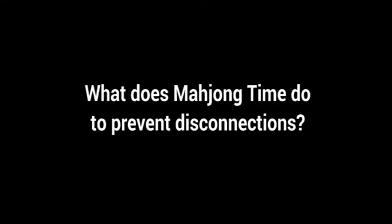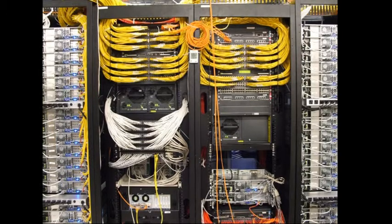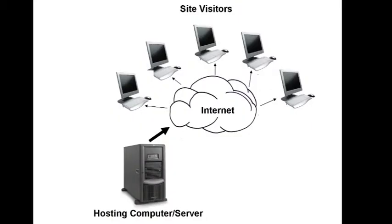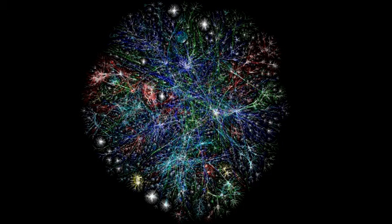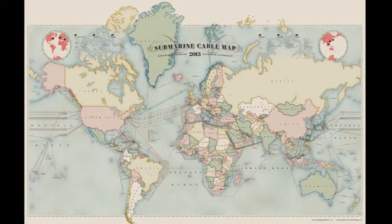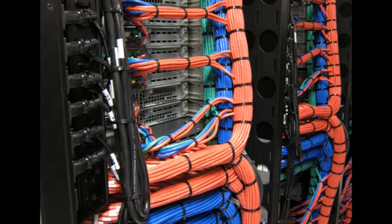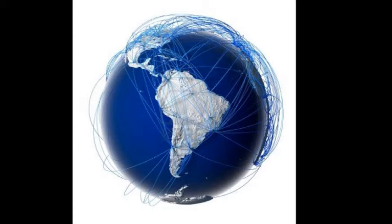What does Mahjong Time do to prevent disconnections? Mahjong Time runs on state-of-the-art servers maintained 24/7 by networking professionals. Internet connections are intrinsically faulty due to their length and the number of intermediate servers between your computer and our servers. Any intermediate network is a potential point of occasional failure. The quality of your connection to your ISP, the quality of their connection to the Internet Backbones, and the quality of all paths between them and Mahjong Time will affect the speed and stability of your connection. We have fast and underutilized servers and a direct Internet Backbone connection, but depending on your location there can be up to 20-30 intermediate networks connecting you to us, and we constantly monitor connection performance on our side to prevent issues.